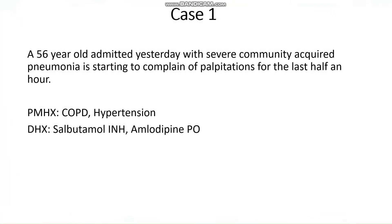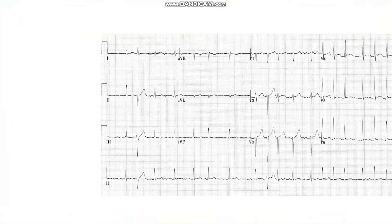Now that we have a formula to approach any ECG or arrhythmia, let's test it out on some cases. Our first case is a 56-year-old admitted with severe community-acquired pneumonia who is starting to complain of palpitations for the last half an hour. Their past medical history includes COPD and hypertension, and their medications are listed below. This is what their ECG looks like — please feel free to pause the video and have a go at diagnosing this yourself.